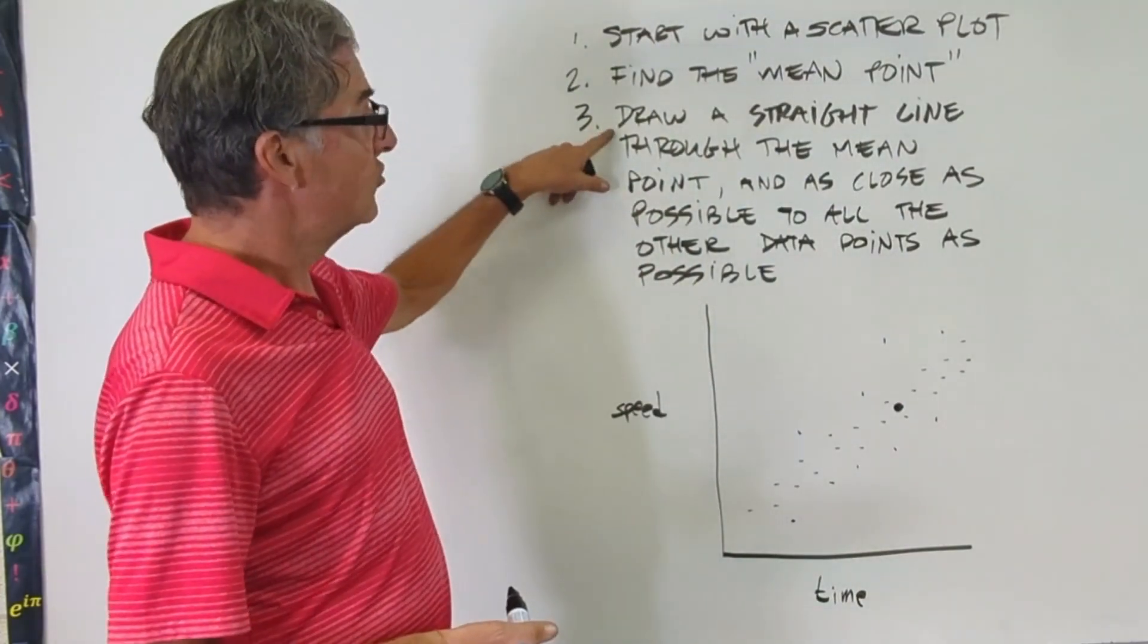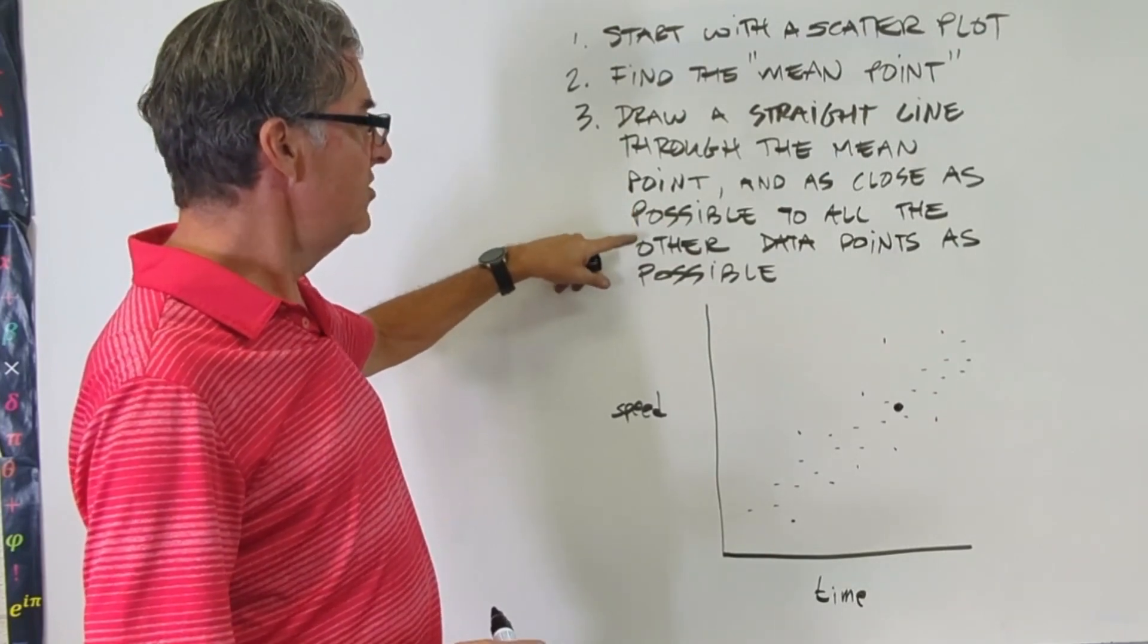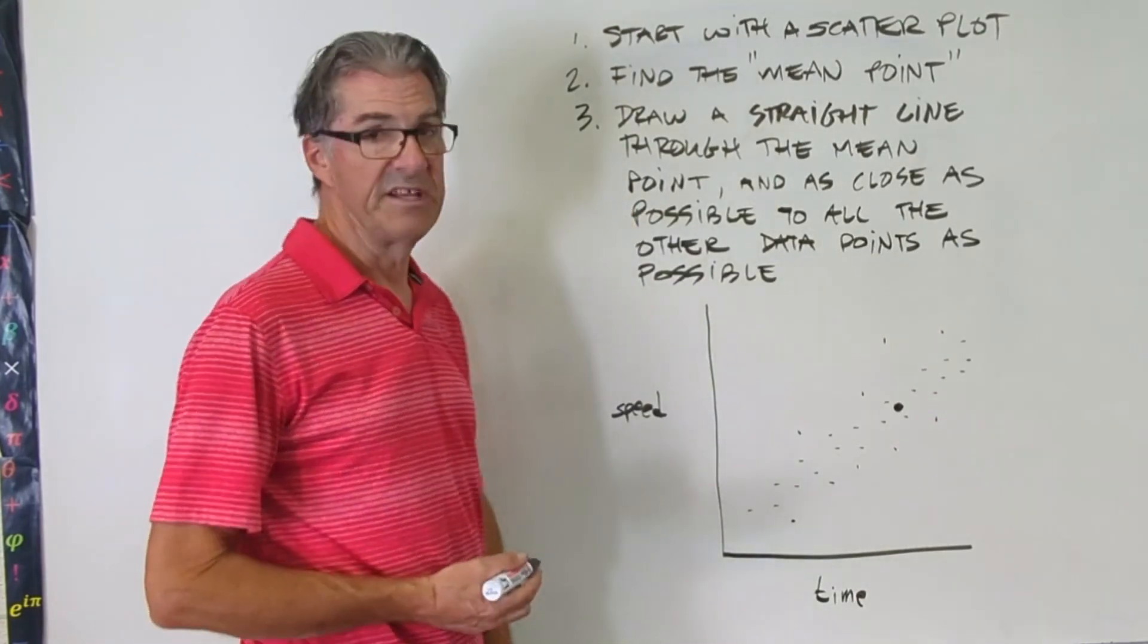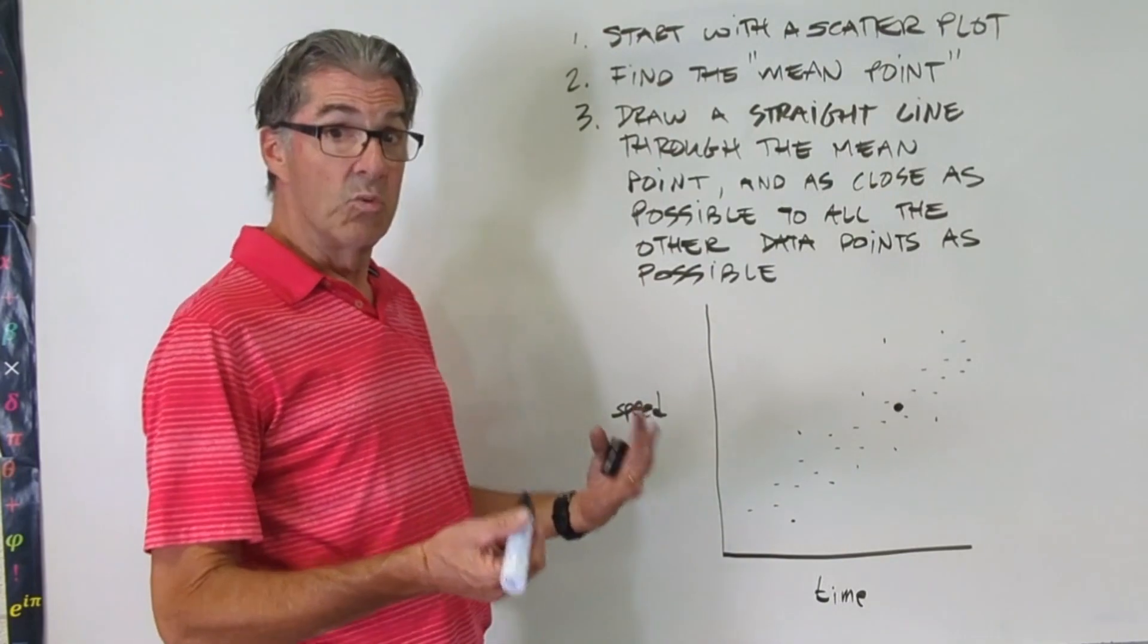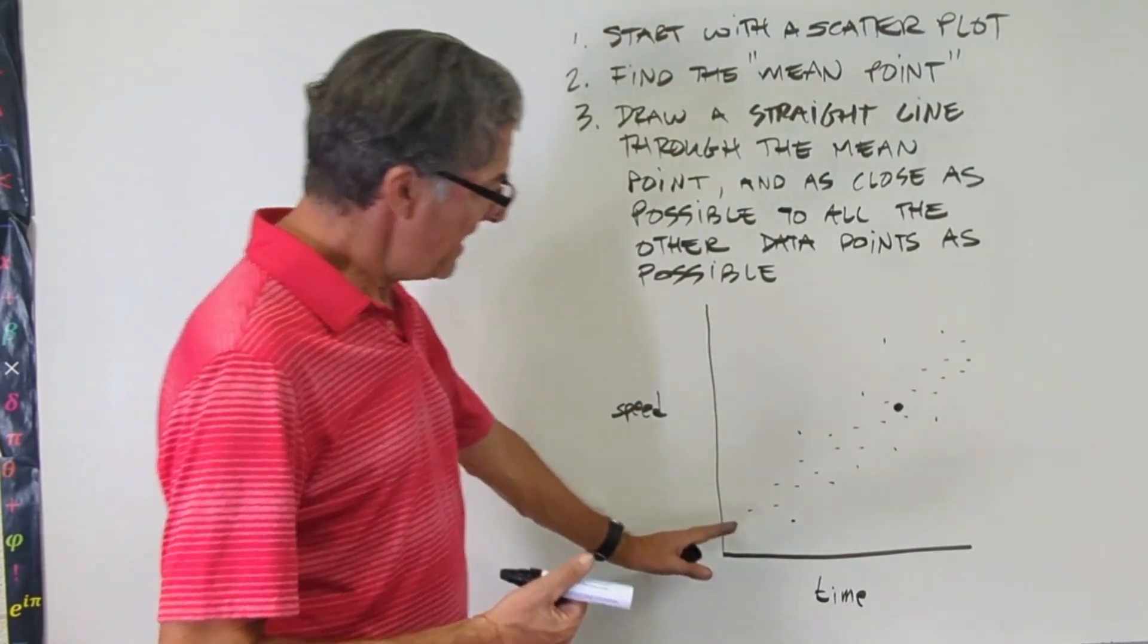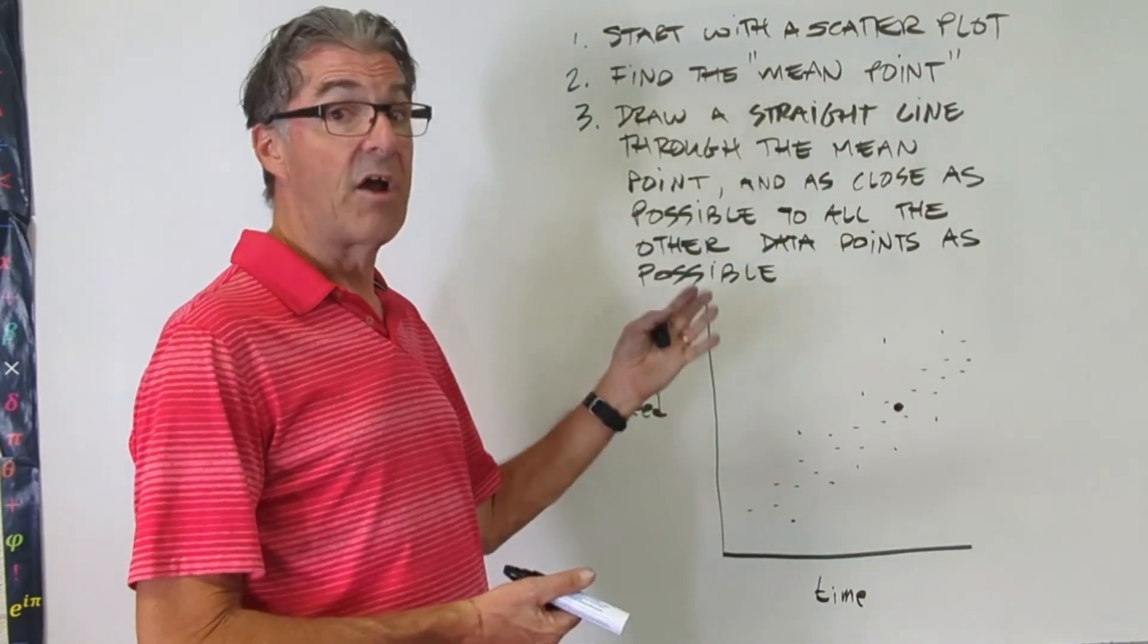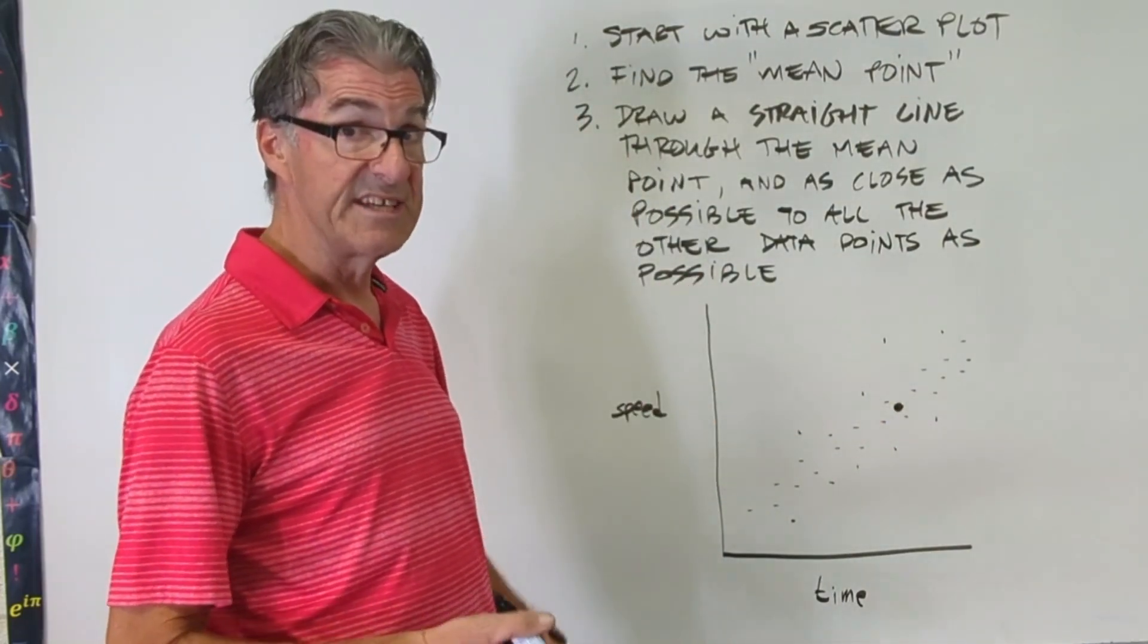Third, draw a straight line through the mean point and as close as possible to all the other data points. The way to do that is to draw your straight line so that an equal amount of these scatterplot points are above and are below that line.